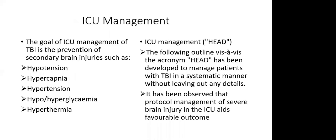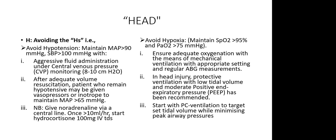The management goal of traumatic brain injury is to prevent secondary brain injuries. The primary injury has already occurred, but you want to prevent secondary brain injuries including hypotension, hypoxia, hypercapnia, hypo- or hyperglycaemia, and hypothermia. For ICU management, I use the mnemonic HEAD. The first H stands for avoiding the 'hypos': hypotension, hypoxia, hypothermia, and hypoglycaemia.